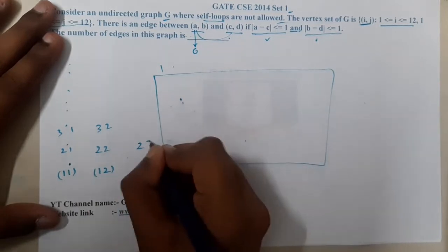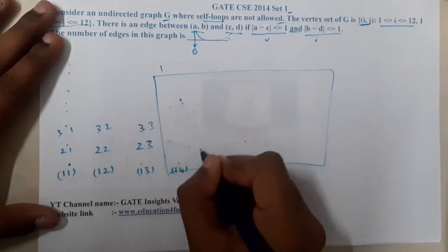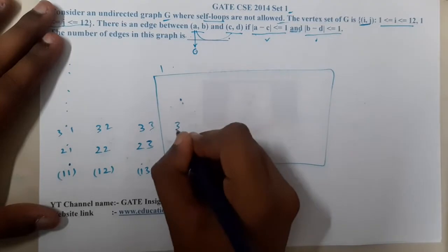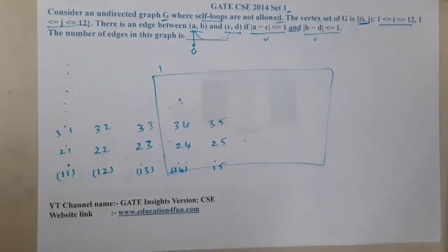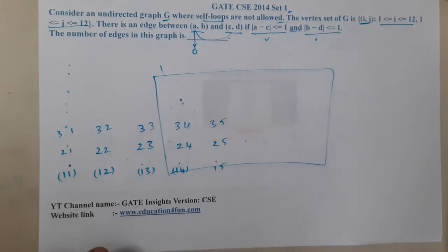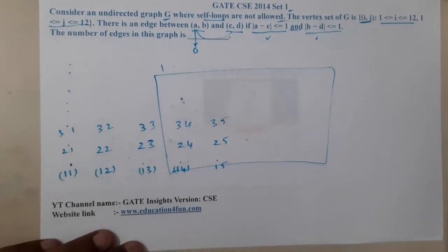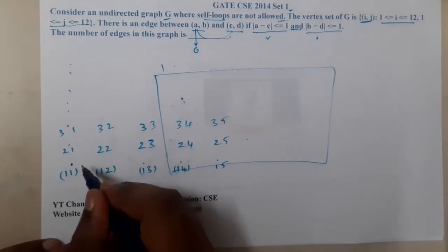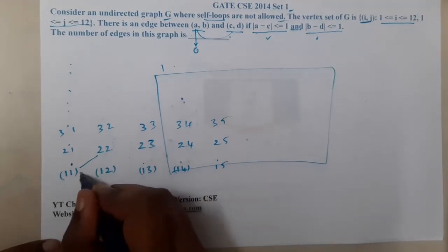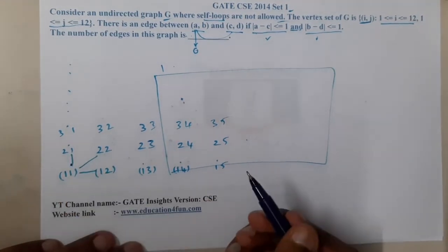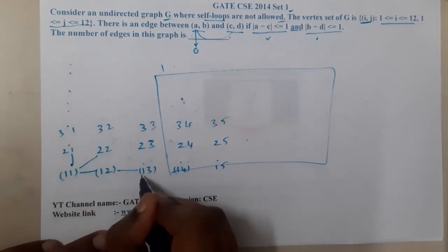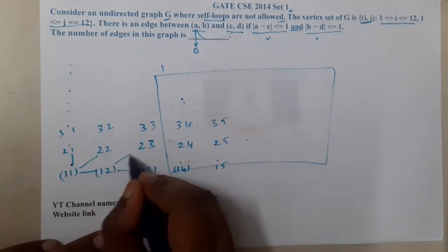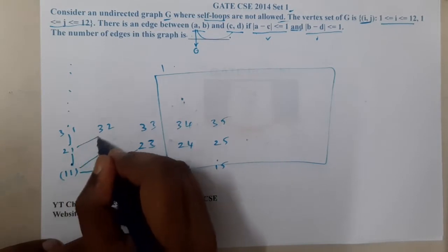The edge will only exist if the distance between a and c is 1. So basically these two are allowed, these two are allowed, these two are allowed. Similarly, these two are allowed, these two are not allowed because it's an AND operation. So basically the graph will grow in this way.